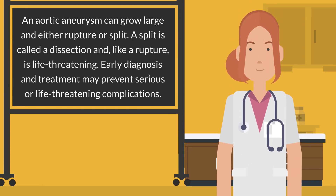An aortic aneurysm can grow large and either rupture or split. A split is called a dissection and, like a rupture, is life-threatening. Early diagnosis and treatment may prevent serious or life-threatening complications.